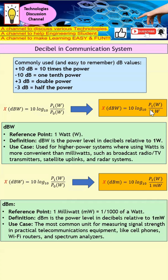For dBm, the reference is 1 milliwatt. The same principle applies: when P1 is more than 1 milliwatt, this will be a positive dBm; when P1 is less than 1 milliwatt, this will be a negative dBm; and when P1 is exactly 1 milliwatt, this will be zero dBm. dBW is mainly used for larger power, while dBm is mainly used for smaller power, making it easy to quantify the power level.